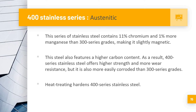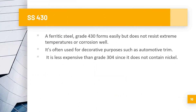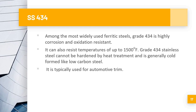The first sub-grade of the 400 series is SS 430, which is a ferritic steel that forms easily but does not resist extreme temperature or corrosion well. It is often used for decorative purposes such as automotive trim and is less expensive than grade 304 since it does not contain nickel.